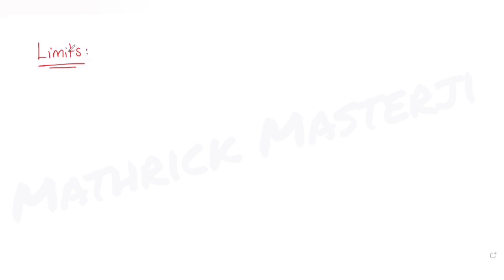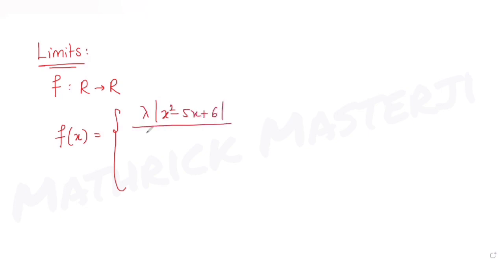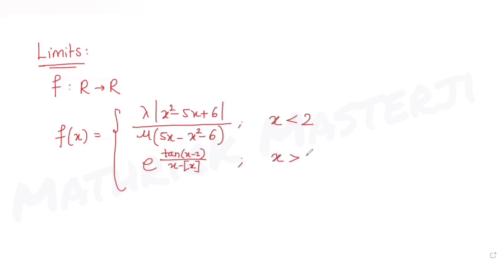The question tells us: let f: ℝ → ℝ, defined as f(x) = λ·|x² − 5x + 6| / μ(5x − x² − 6) when x < 2; and e^(tan(x−2) / (x − ⌊x⌋)) when x > 2. The square bracket notation represents the greatest integer function, which is the greatest integer less than or equal to x.